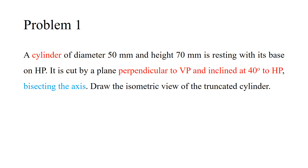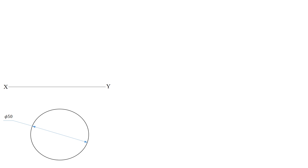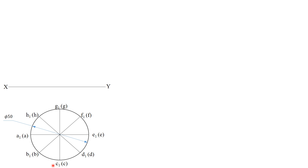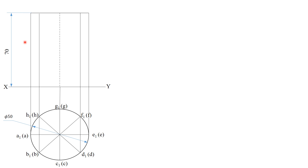As usual, draw the simple projection. The top view will be a circle of base diameter 50 mm. Divide the circle into 8 equal parts and name the points. Project this top view onto the vertical plane and obtain the corresponding front view. Name the front view, which is equal to the height of the cylinder, that is 70 mm, and name all the points. The simple projection is now complete.